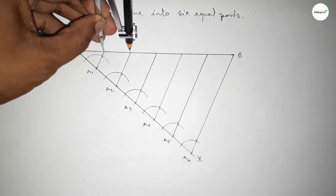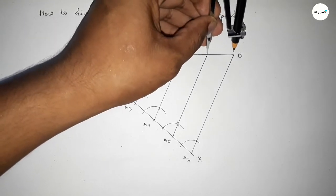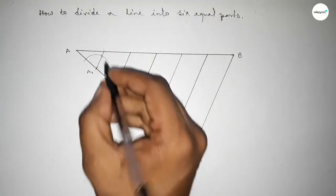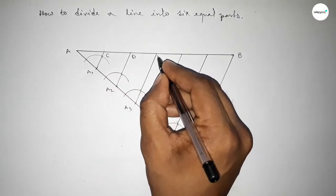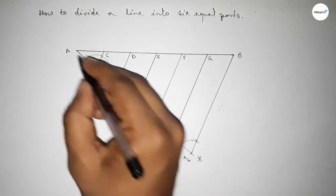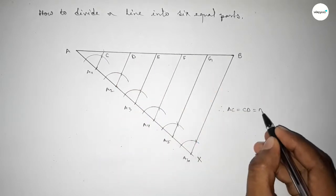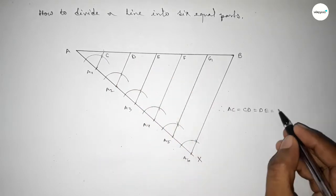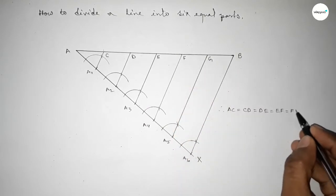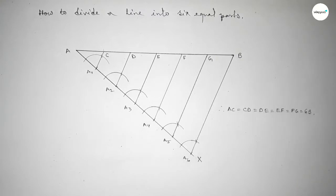Now checking the lengths — all the lengths are approximately equal. Taking points C, D, E, F, and G, we can see that AC equals CD equals DE equals EF equals FG equals GB. That's all — thanks for watching! If this video is helpful to you, please share it with your friends.